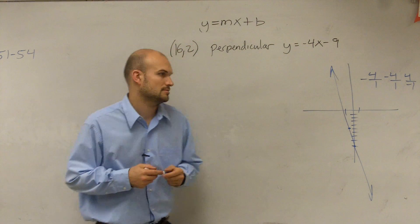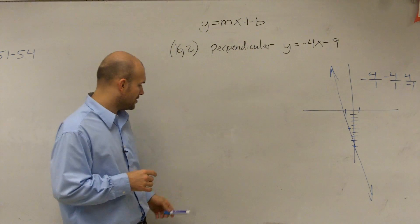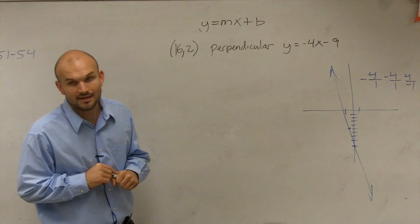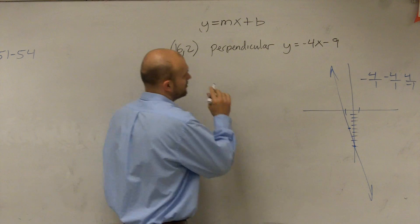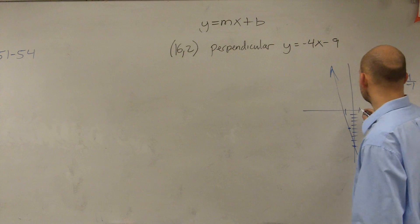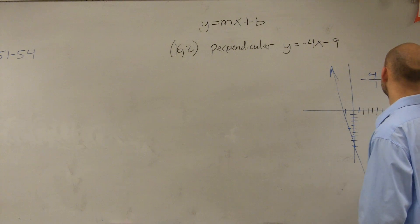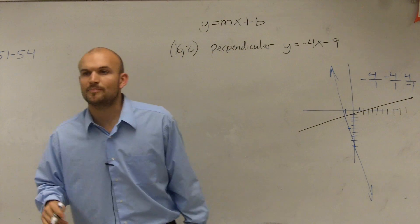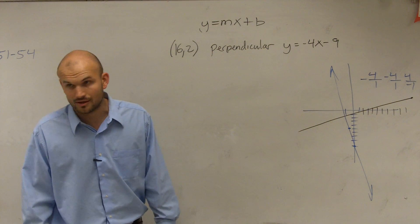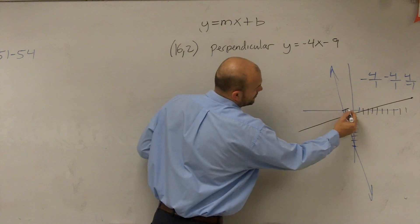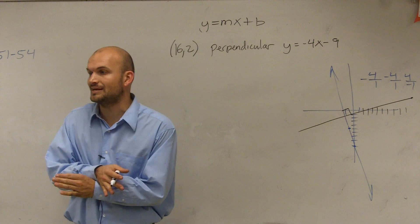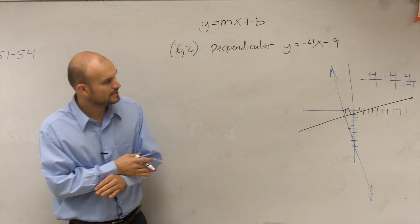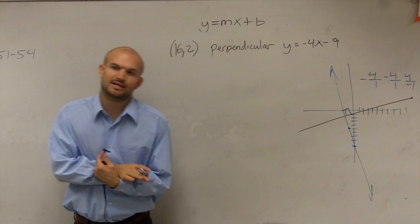Now, what they're asking us is that my line has to be perpendicular to that. Perpendicular does not mean parallel. Perpendicular means it's going to intersect, and when they intersect they're going to create a 90-degree angle — remember learning that in geometry? So when they cross, they're going to create a 90-degree angle.